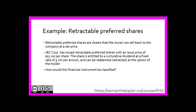Let's look at an example: retractable preferred shares. These are shares the owner can sell back to the company at a set price. JBC Corp has issued retractable preferred shares with an issue price of $52 per share. The share is entitled to a cumulative dividend at a fixed rate of 3.2 percent per annum and can be redeemed — retracted at the option of the holder. How would this financial instrument be classified?